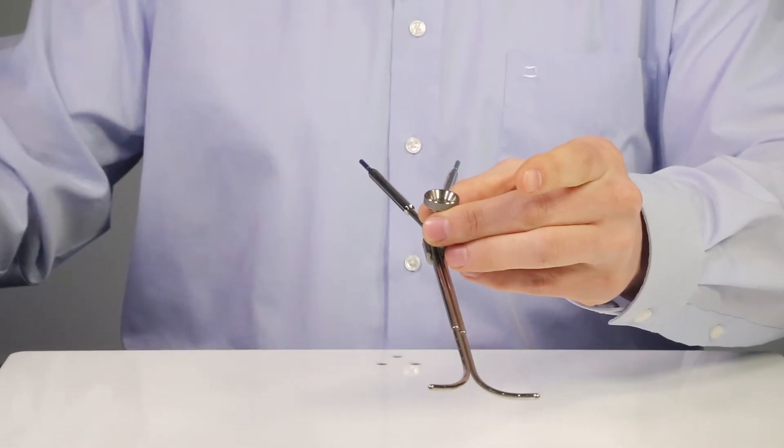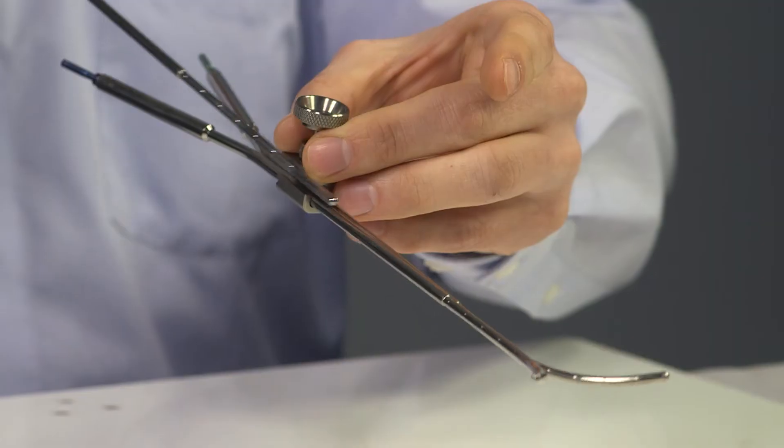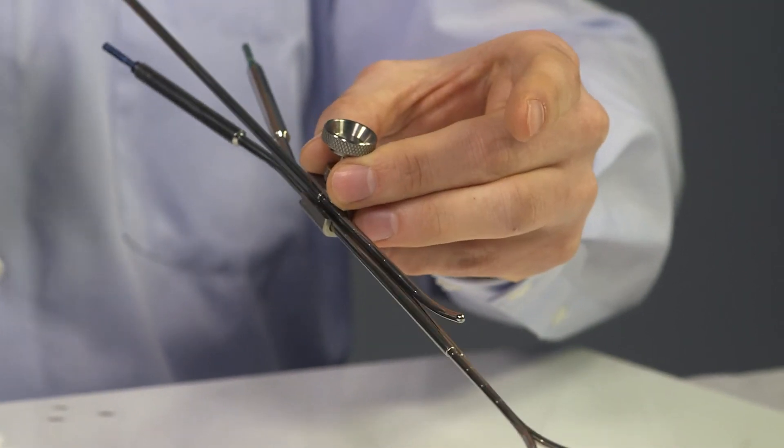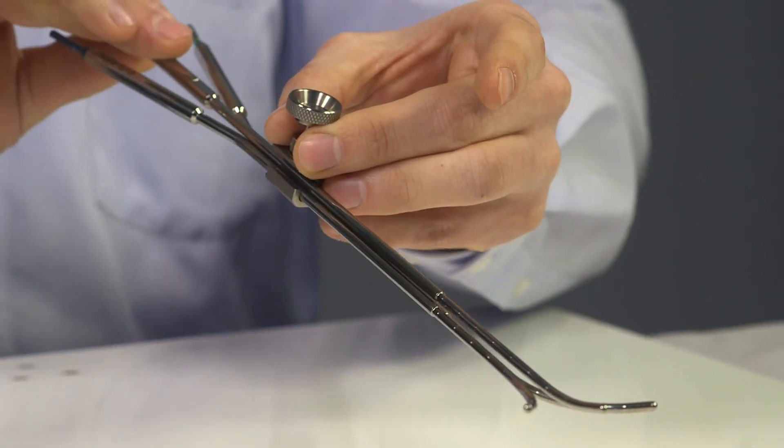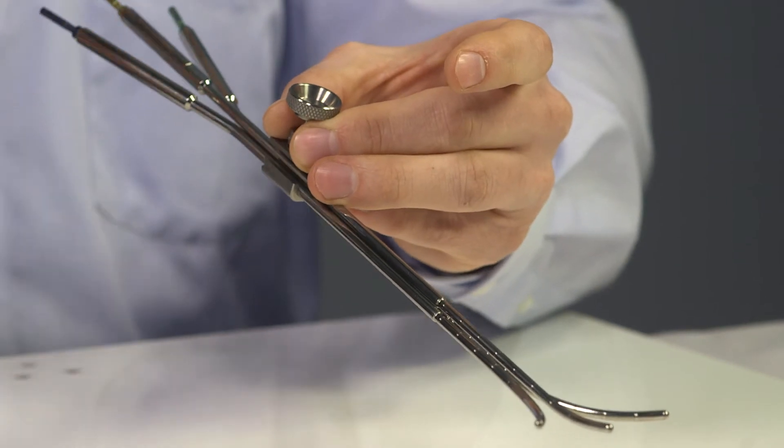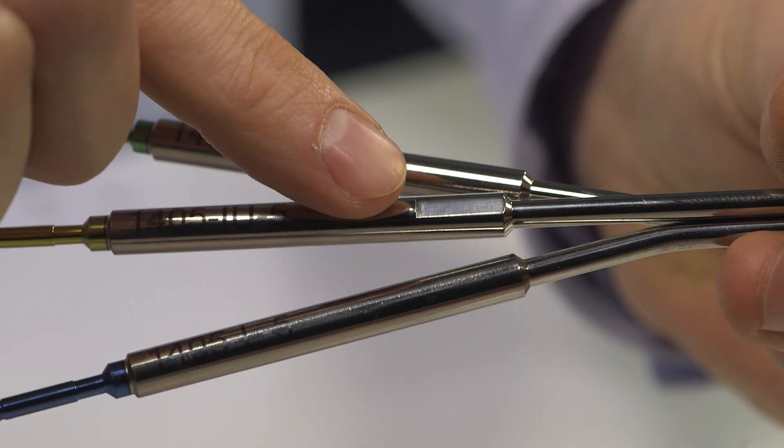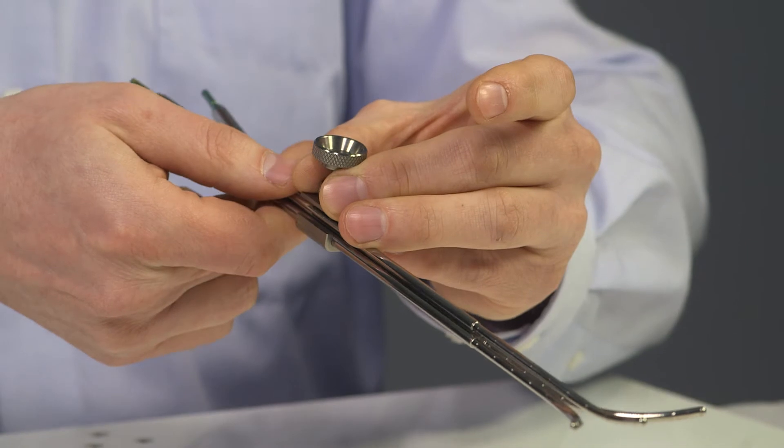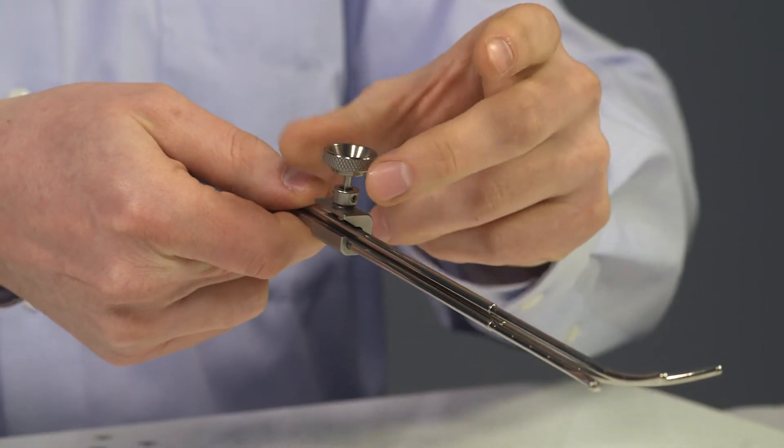In case a third tube is needed, it is inserted now, guided over the other tubes, and the flat indicator helps to find the right orientation. The assembly can be locked into place using the lock screw.